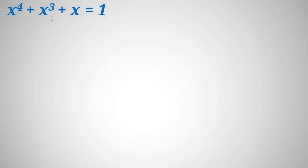We have x to the 4 plus x cubed plus x equal to 1, and we want to find all values of x. Let's take all things to one side: x to the 4 plus x cubed plus x minus 1 equal to 0. One way is to check small examples, for example 0, 1, negative 1.